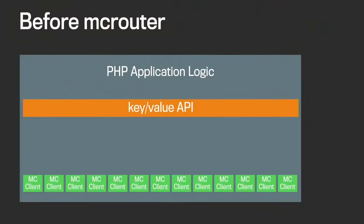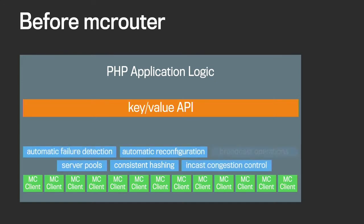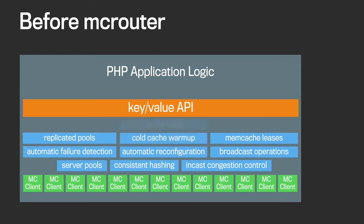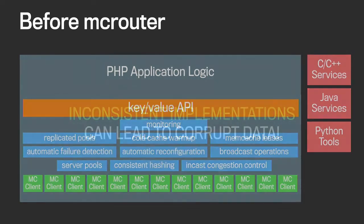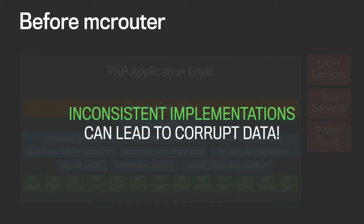So what was it like before MacRouter? We have our PHP application logic, we have the simple key-value API, and then we needed to add a bunch of features to the stack. We started adding consistent hashing, server pools, incast congestion control, automatic failure detection, and so on. This stack got really bloated really quickly. At the same time, we have all these other services not written in PHP — C++ services, Java services, Python tools — and all of them had to fend for themselves if they wanted to talk to cache. The problem is that inconsistent implementations can lead to corrupt data, which was obviously a bad situation.